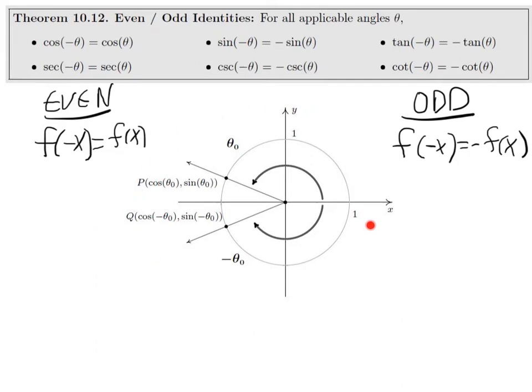This can be seen more clearly with this diagram. Here we have positive theta and negative theta. This point is (cos(θ₀), sin(θ₀)) and this one is (cos(-θ₀), sin(-θ₀)). The x-values of these two points are equal. The x-values are the cosine, so cosine of negative theta equals cosine of theta.